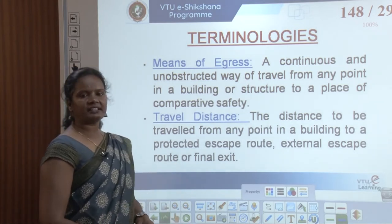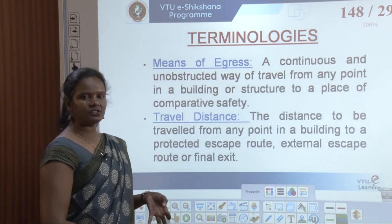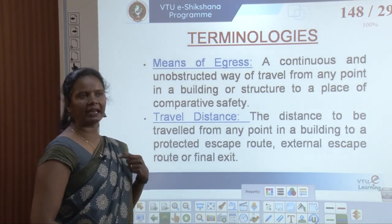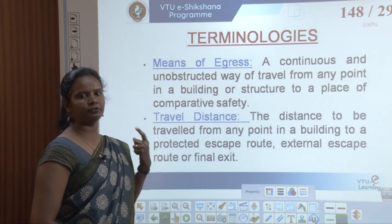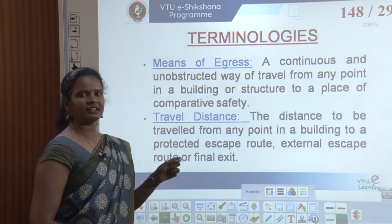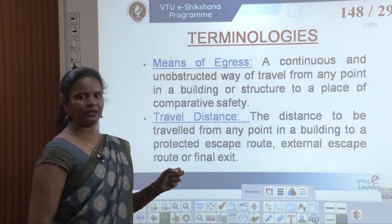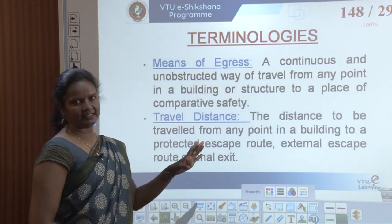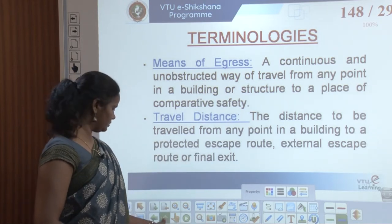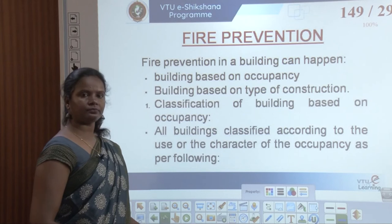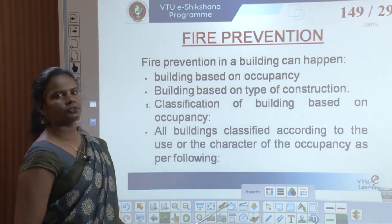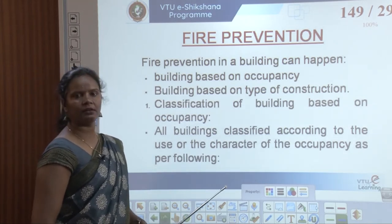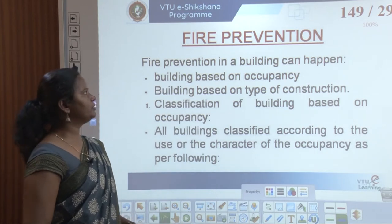Travel distance is the distance which has to be travelled from any point of a building to a protected escape route, external escape route, or final exit. Those are a few major terminologies used in fire and life safety design.